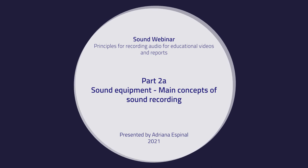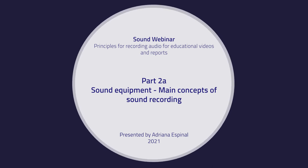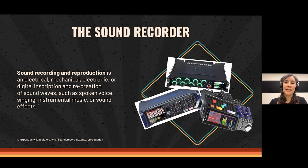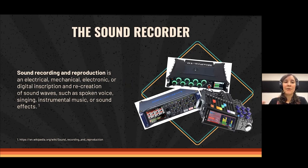We're going to talk about the equipment we will use for these sound recordings. First of all, we have the sound recorder, where we are going to record everything. The definition from Wikipedia: sound recording and reproduction is an electrical, mechanical, electronic or digital inscription and recreation of sound waves, such as spoken voice, singing, instrumental music or sound effects. Nowadays, the most common inscription method is digital, and almost all of the recorders we use nowadays are digital.